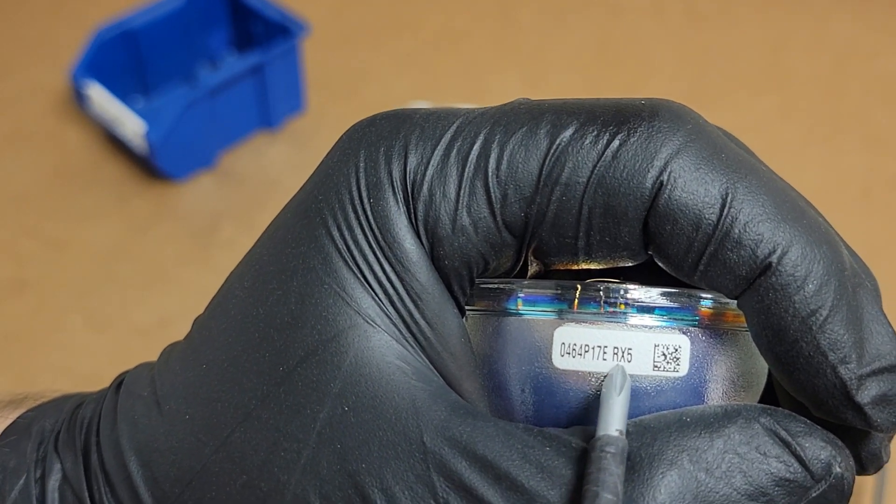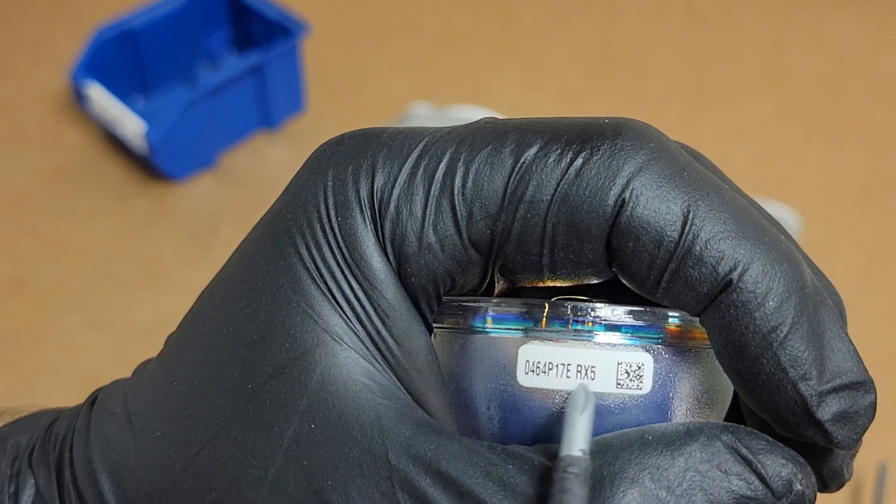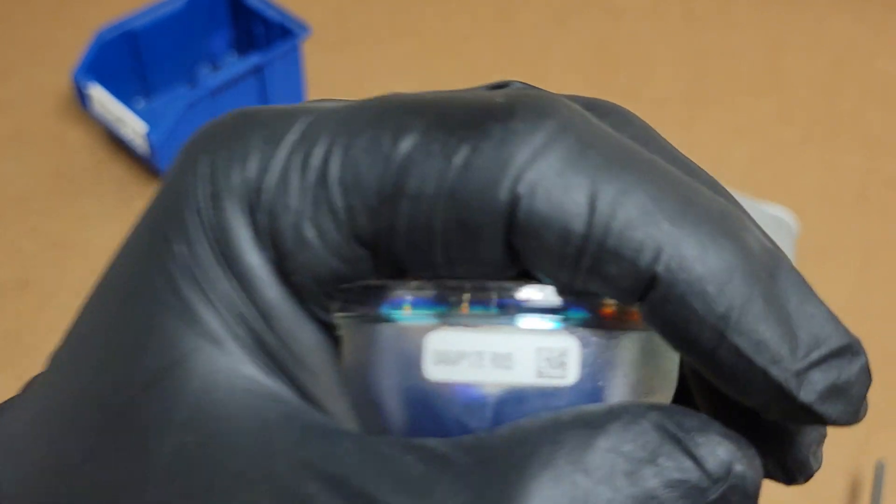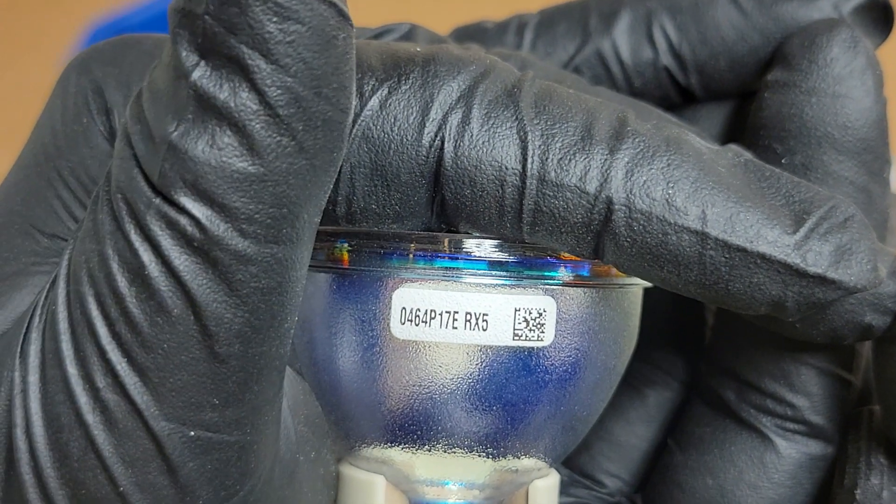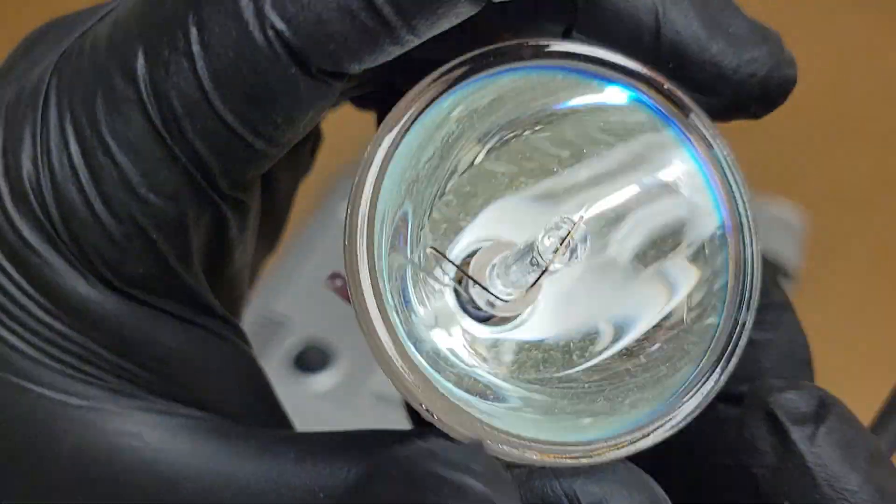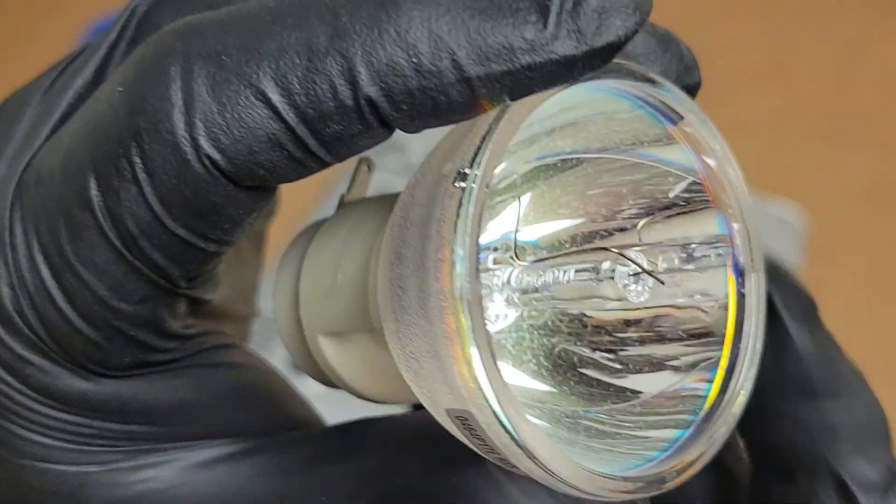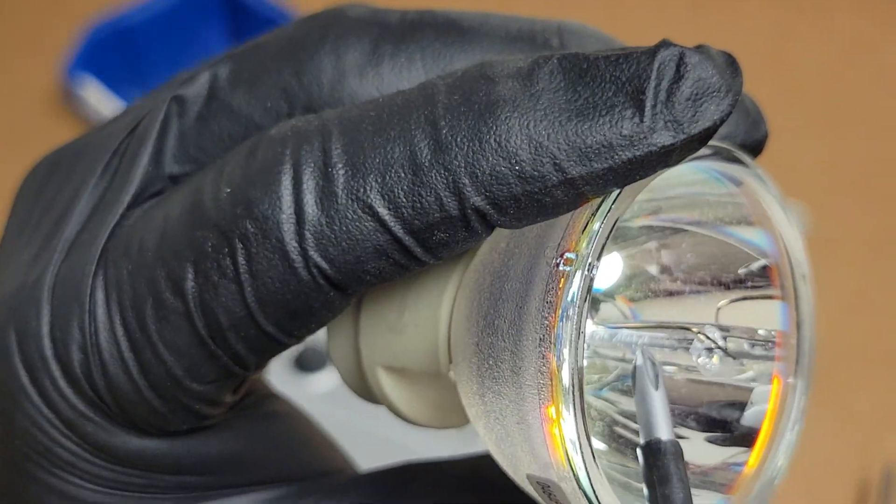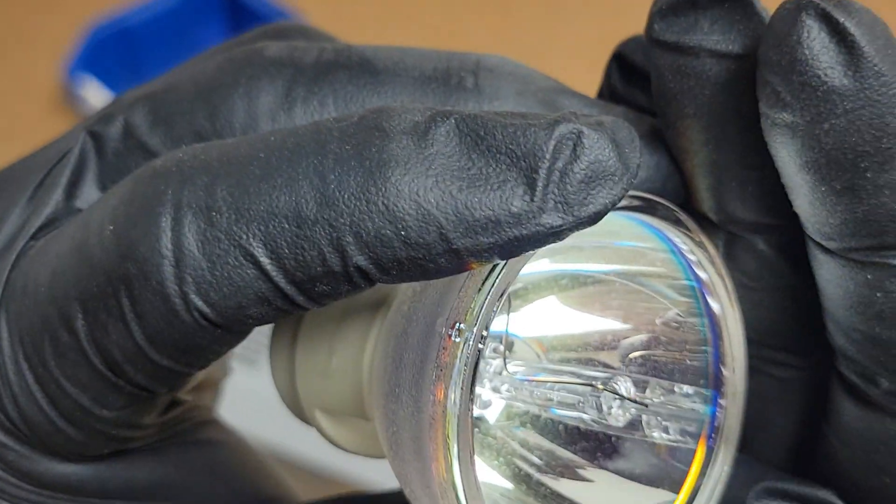The first number will be the serial number of the arc tube. This second set of info here, this RX-5, that's actually a date code. I forget how you interpret those, but I have a chart somewhere. But that tells you the date code and where it was manufactured. And then the serial number should match the number that's engraved on the side of the arc tube there.